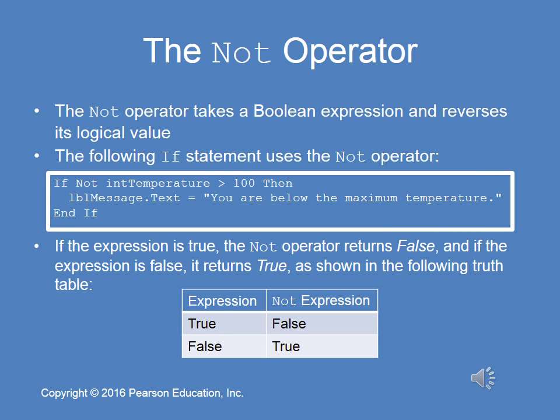The NOT operator is a unary operator — the others are binary, requiring two operands (like a bicycle has two wheels vs. a unicycle). NOT takes one Boolean expression and reverses its logical value. For example, if Not intTemperature > 100 — if intTemperature is 120, that's true, but NOT makes it false. The truth table is very simple.